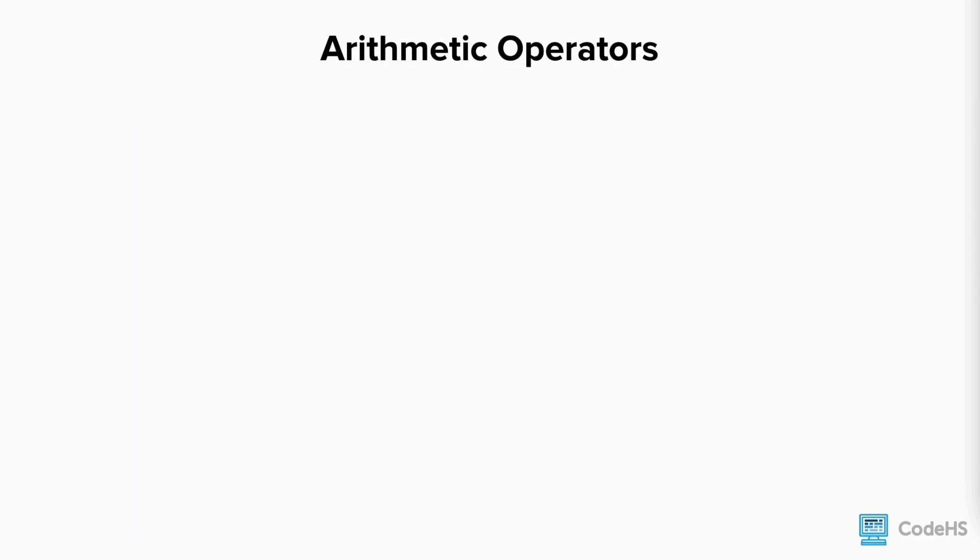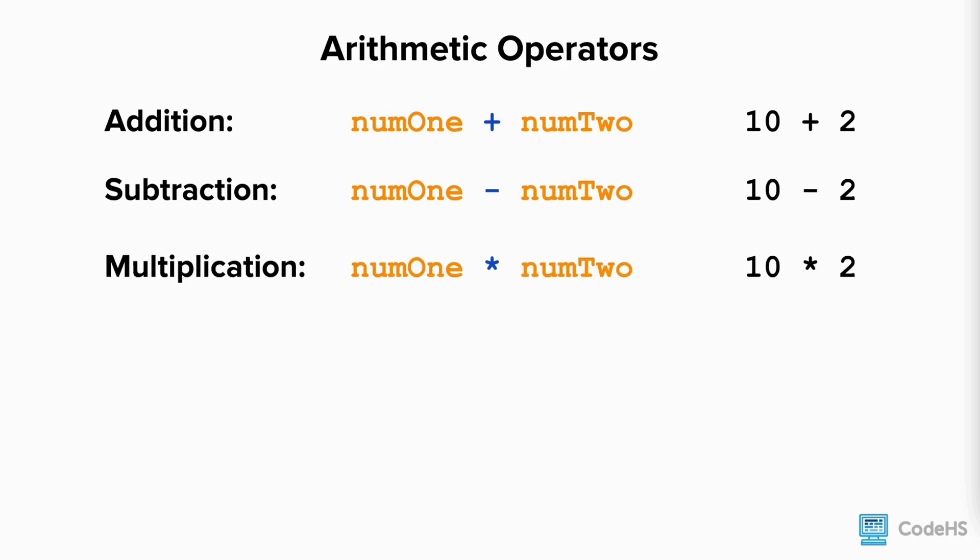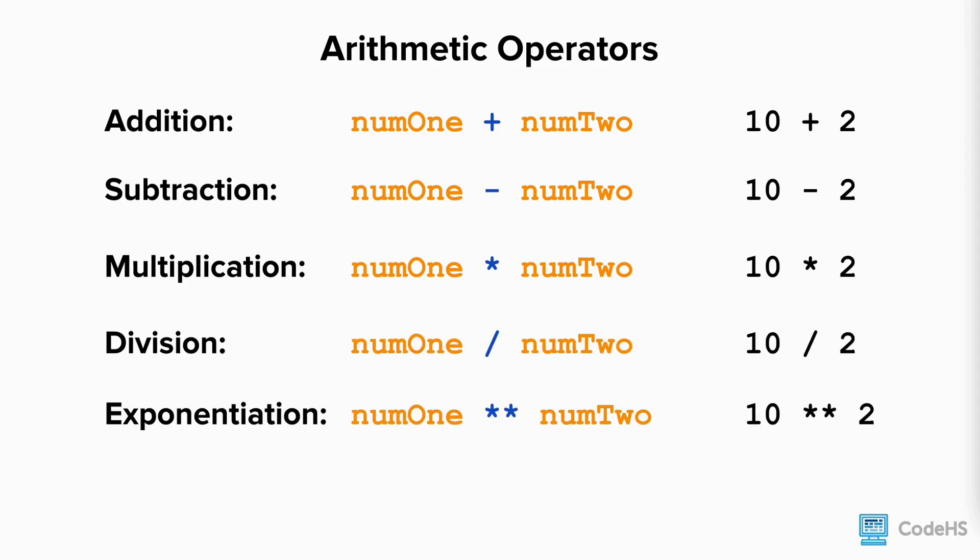Let's go over basic math operators in JavaScript. To add, we use the plus sign. To subtract, we use the minus sign. To multiply, we use an asterisk. To divide, we use a slash. For exponents, we use two asterisks.